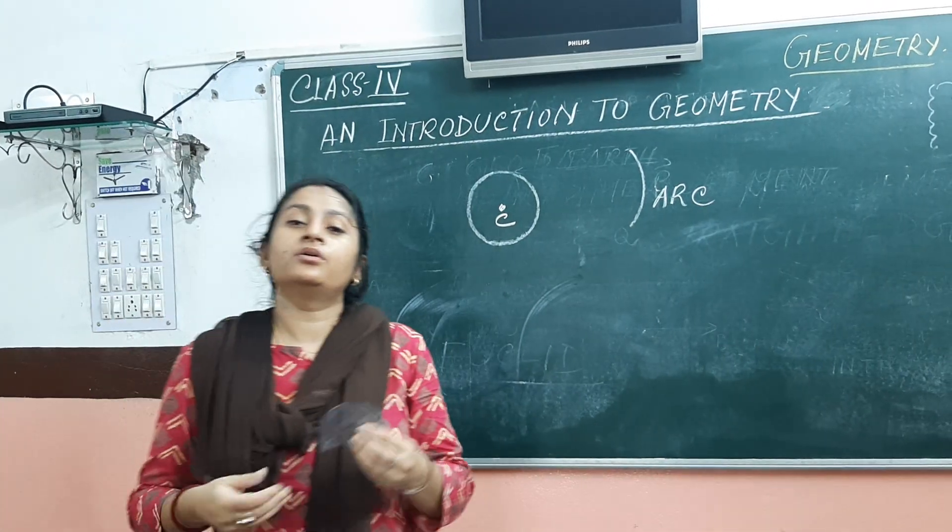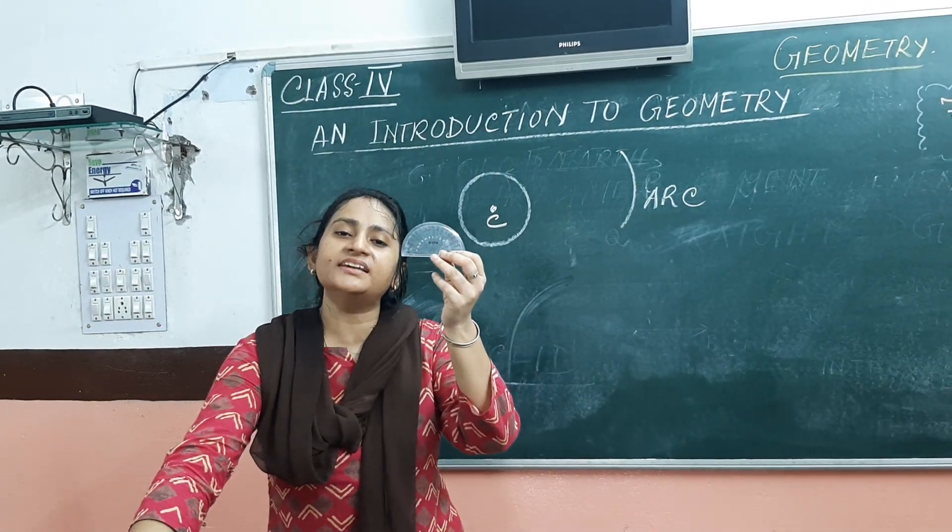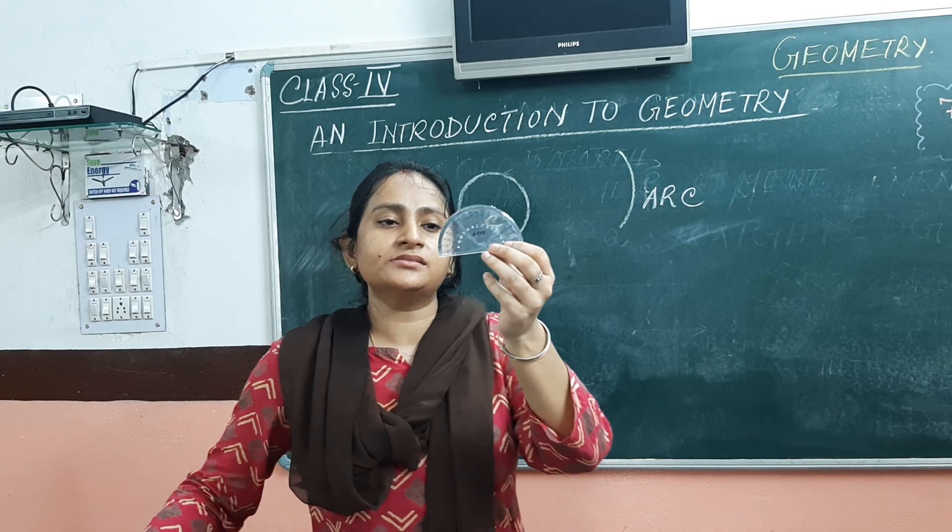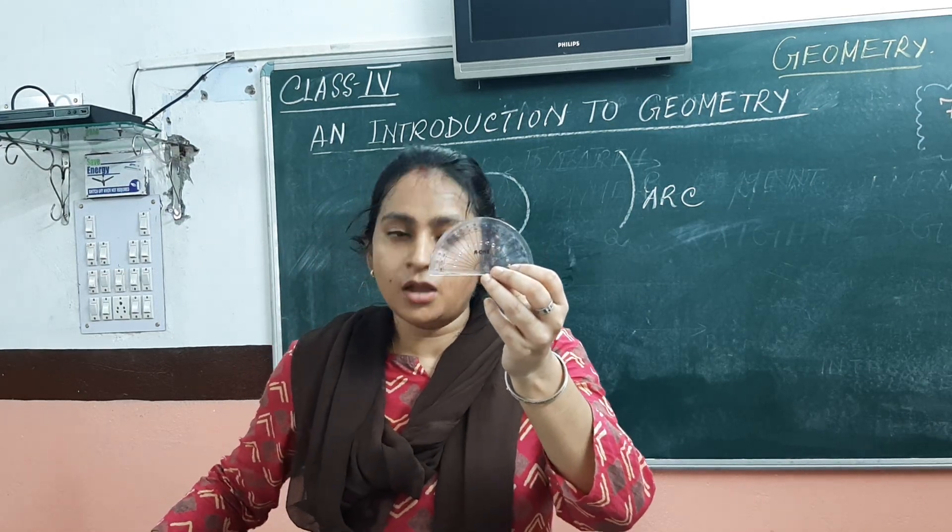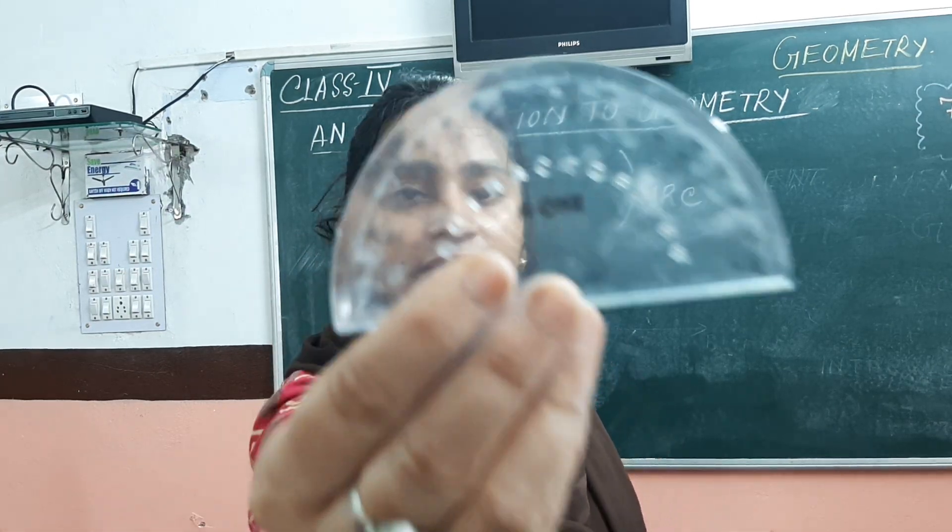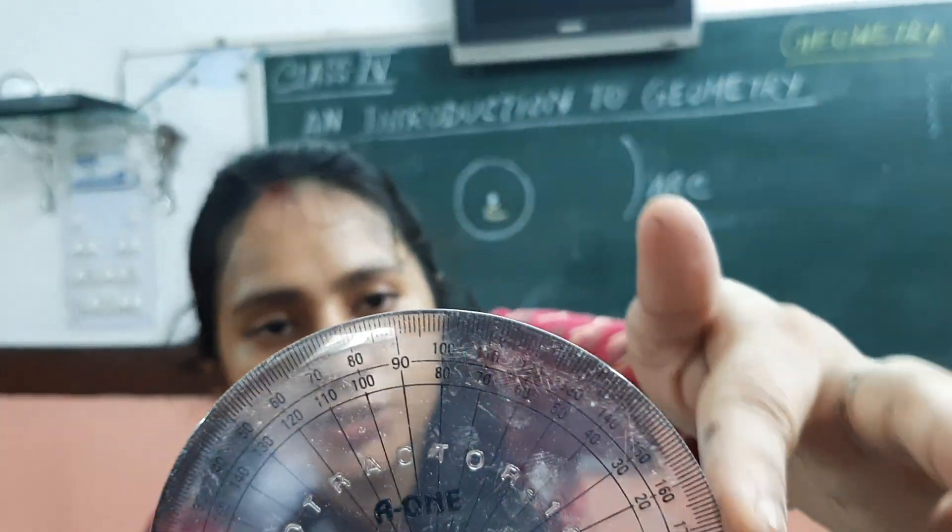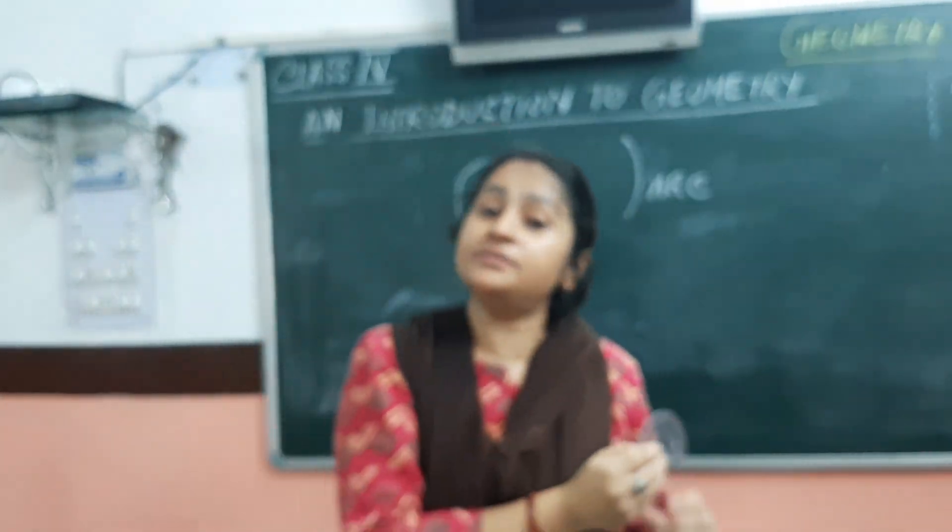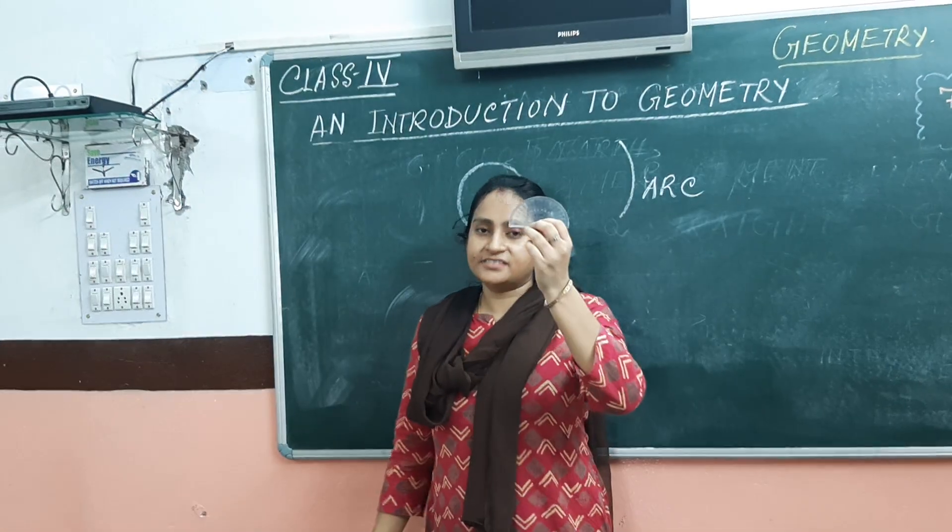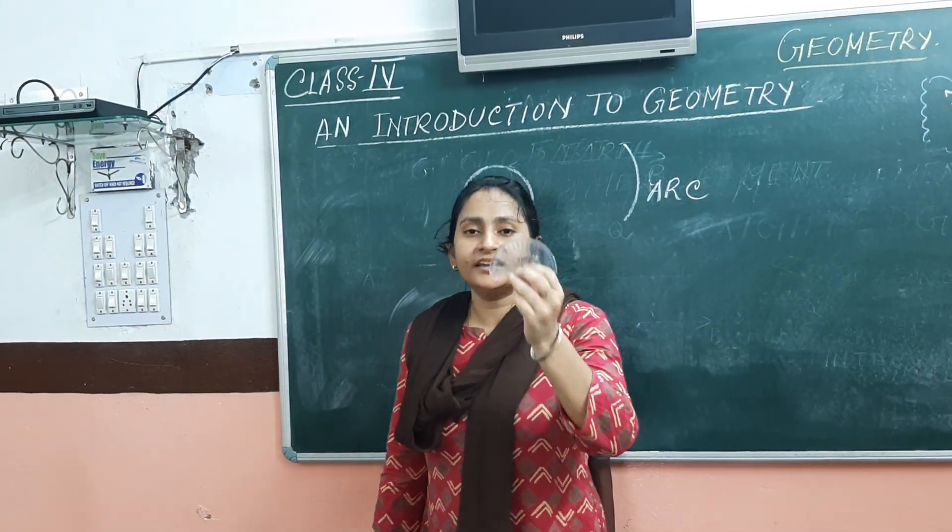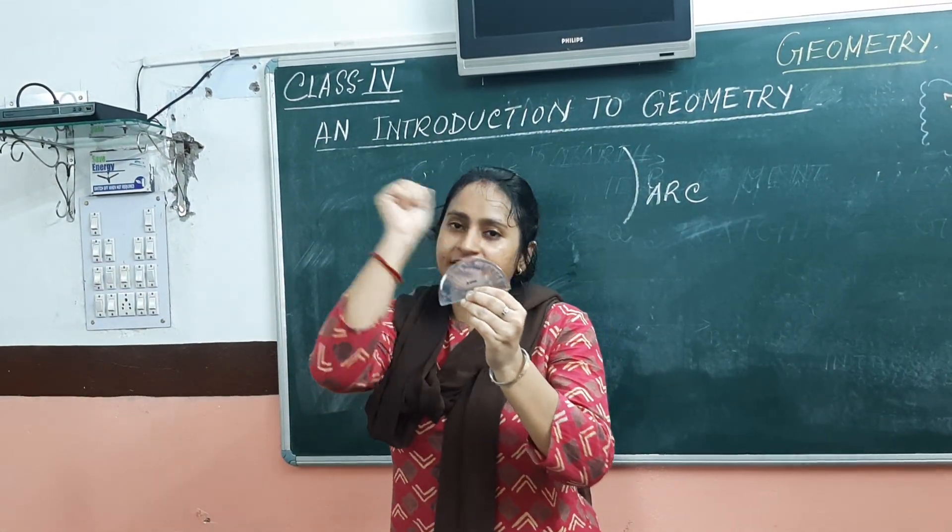Next we have this semicircular disc which is known as protractor. Once again see children carefully. It is again graduated into divisions but not in meters and centimeters. It is graduated into degrees, zero to 180 degree.